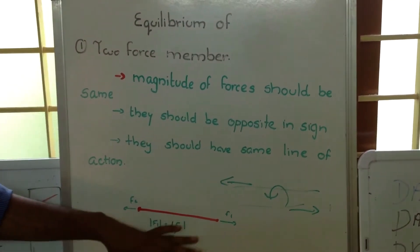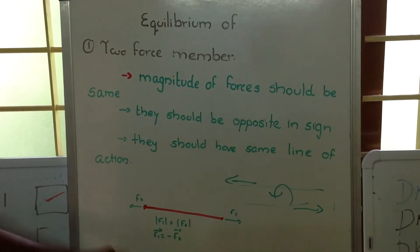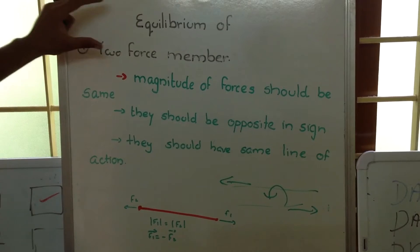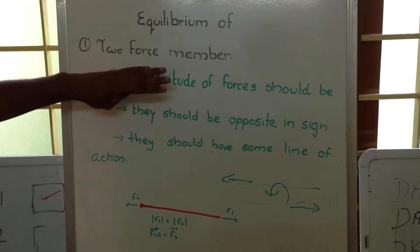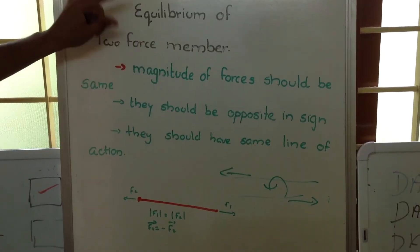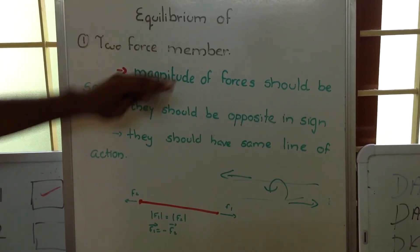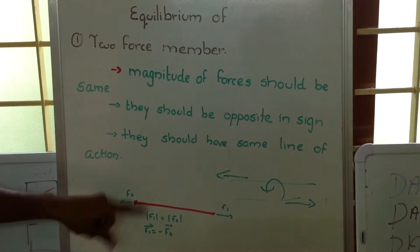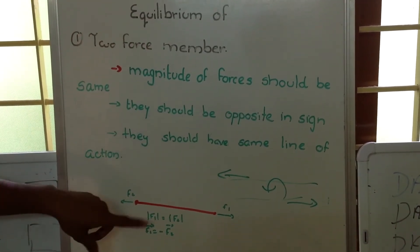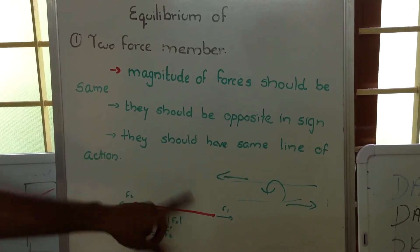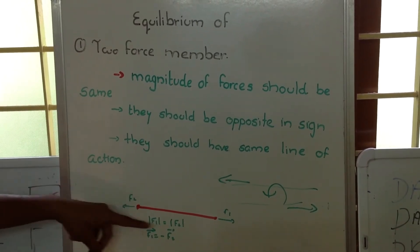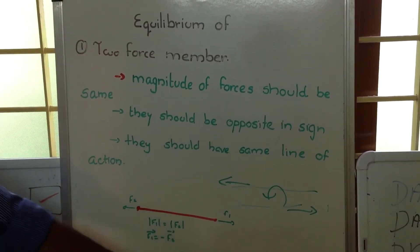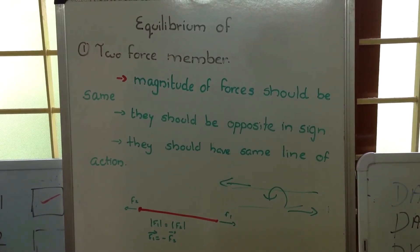But if there are only two forces acting in a system, they should be along the same line to keep it in the equilibrium position. So for a two-force member to be in equilibrium: the magnitude of forces should be the same, they should act in opposite directions, and they should act along the same line of action.